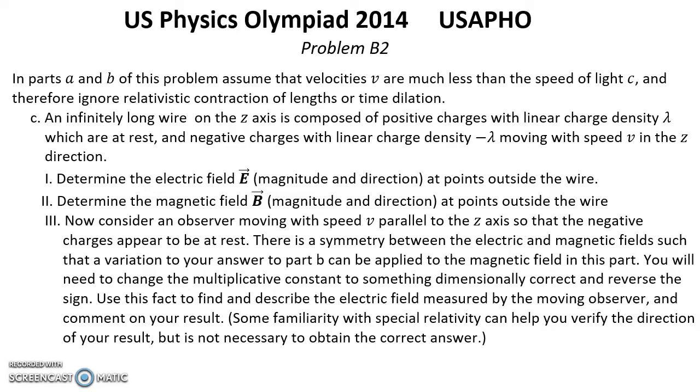Part C: An infinitely long wire on the Z axis is composed of positive charges with linear charge density lambda which are at rest, and negative charges with linear charge density negative lambda moving with speed V in the Z direction.